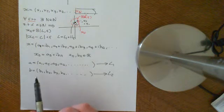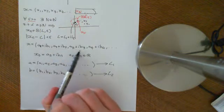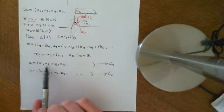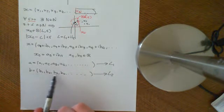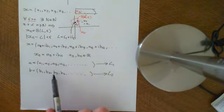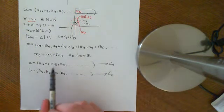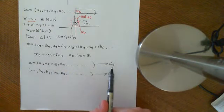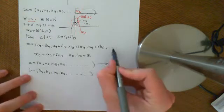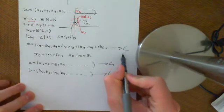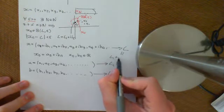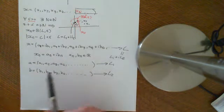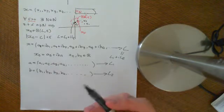In the previous video I stated the result that if you have a sequence of complex numbers and you want to know what it converges to, you can split it into two sequences: a sequence of the real parts and a sequence of the imaginary parts. If this sequence converges, these two sequences will converge, and that's what we're going to prove. The limit of the sequence of real parts will converge to the real part of the limit, and we can handle sequences of complex numbers by reducing them to sequences of real numbers.